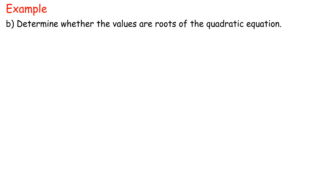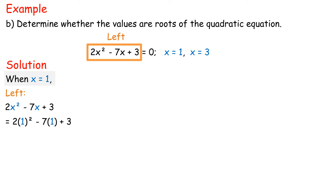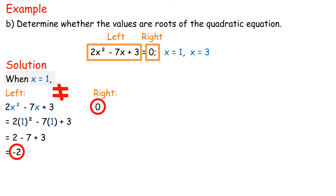Example B: determine whether the values are roots of the quadratic equation 2x² minus 7x plus 3 equals 0, whereby the values are x equals 1 and x equals 3. Solution: when x equals 1, on the left-hand side, 2x² minus 7x plus 3, substitute 1 into x: equals 2(1²) minus 7(1) plus 3, equals 2 minus 7 plus 3, equals negative 2. While the right-hand side is 0. Since the left-hand side and right-hand side are not the same, x equals 1 is not a root of 2x² minus 7x plus 3 equals 0.